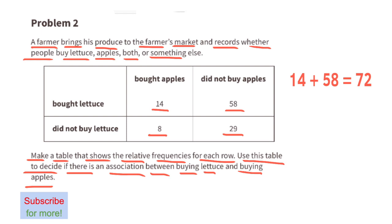Now let's find the number of people who did not buy lettuce. 8 people did not buy lettuce but bought apples, and 29 people did not buy lettuce and did not buy apples — that's a total of 37 people who did not buy lettuce. 14 out of 72 people bought apples and lettuce; that's 19% of the people.